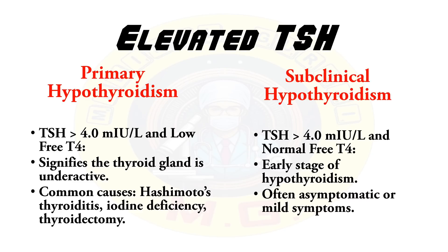The second condition is subclinical hypothyroidism, where the TSH level is more than 4 and free T4 is normal. It is the early stage of hypothyroidism and is often asymptomatic or with mild symptoms.